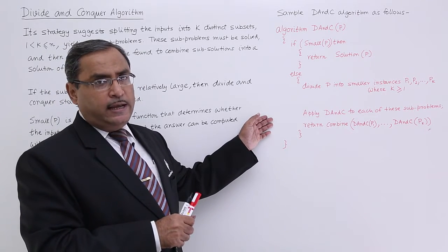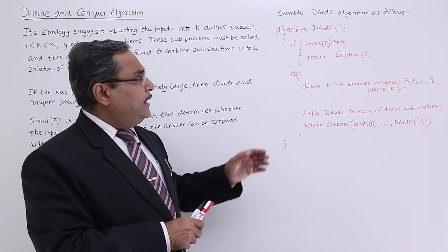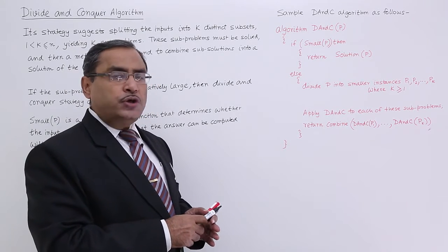Algorithm divide and conquer, it is taking p as input argument. If small p, then return solution p.